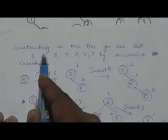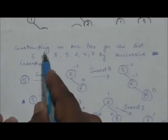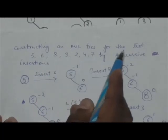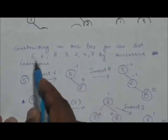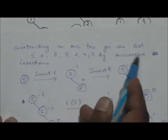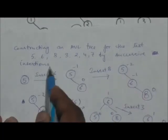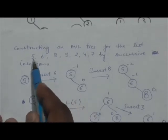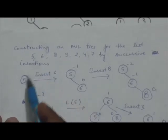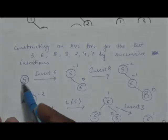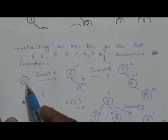Hello friends, welcome back. In this tutorial we will construct an AVL tree for this list of keys by successive insertions. First, we will insert the key 5 in an empty AVL tree, so 5 will become the root.